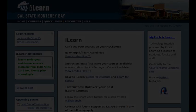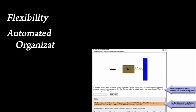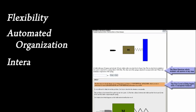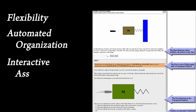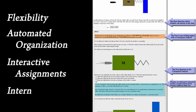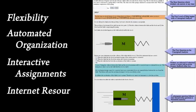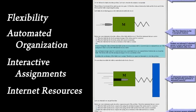The advantages that MOOCs have over traditional classes include increased flexibility for students and automated organization and processing for instructors. They have the overall benefit of allowing for interactive assignments. Online courses can distribute software as well as provide browser-accessible resources.